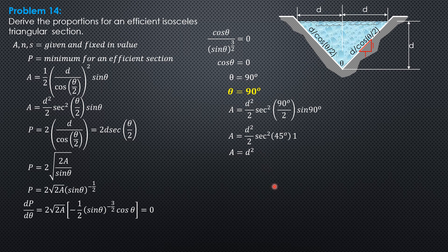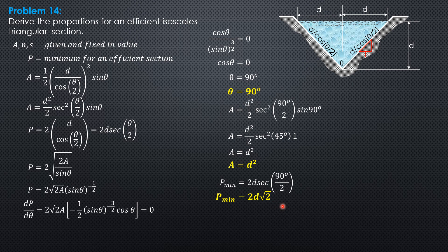The minimum perimeter is 2d·sec(90°/2) = 2d·sec(45°) = 2d·√2 = 2√2·d. The hydraulic radius is area over perimeter, which is d² / (2√2·d) = d / (2√2). Take note of that result.